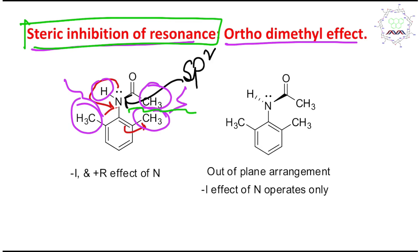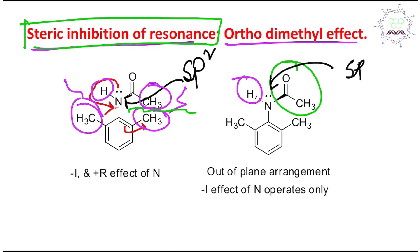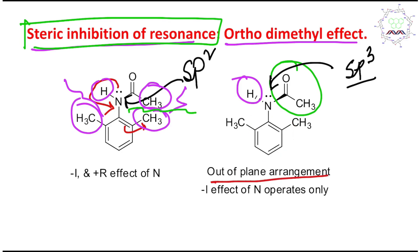To avoid this repulsion, the acetyl group and the hydrogen remain out of plane. If they remain out of plane, the nitrogen remains in sp3 hybridization, and the lone pair cannot be conjugated into the benzene ring. If it were conjugated, the hybridization would again become sp2 — meaning the acetyl and hydrogen would need to come into the plane — which is not possible. Therefore, the nitrogen delocalization into the benzene ring does not occur due to the ortho dimethyl effect.